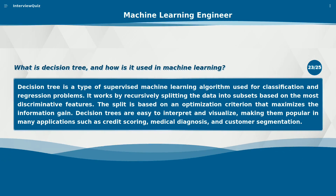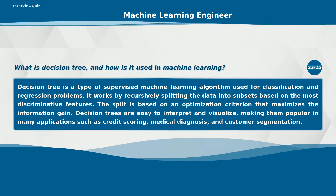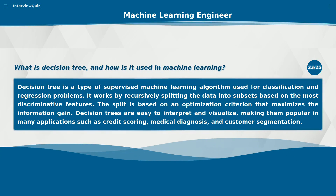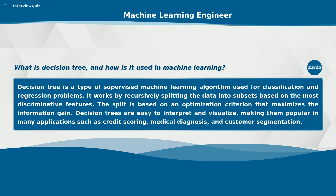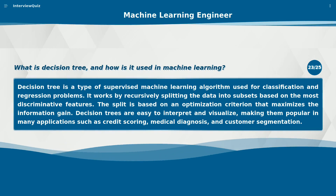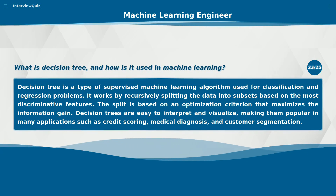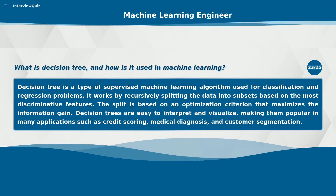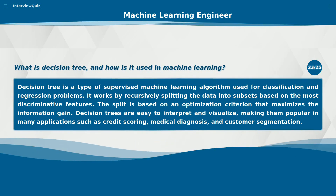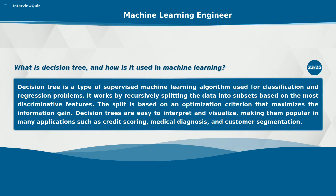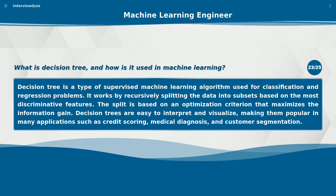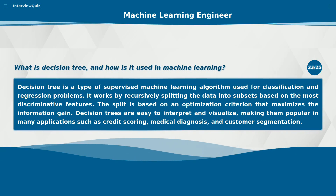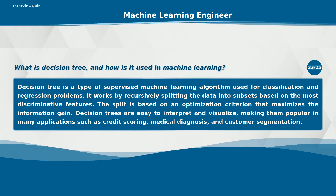What is a Decision Tree and how is it used in machine learning? A Decision Tree is a type of supervised machine learning algorithm used for classification and regression problems. It works by recursively splitting the data into subsets based on the most discriminative features, using an optimization criterion that maximizes the information gain. Decision Trees are easy to interpret and visualize, making them popular in many applications such as credit scoring, medical diagnosis, and customer segmentation.